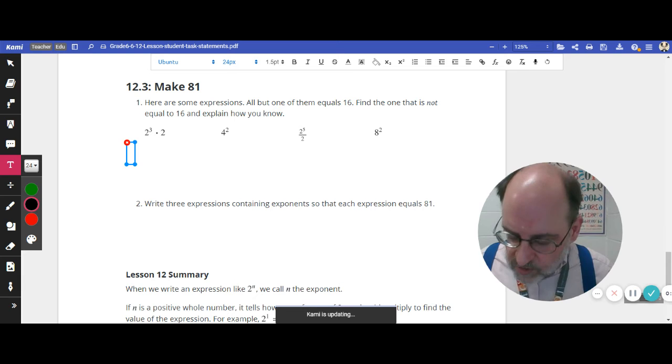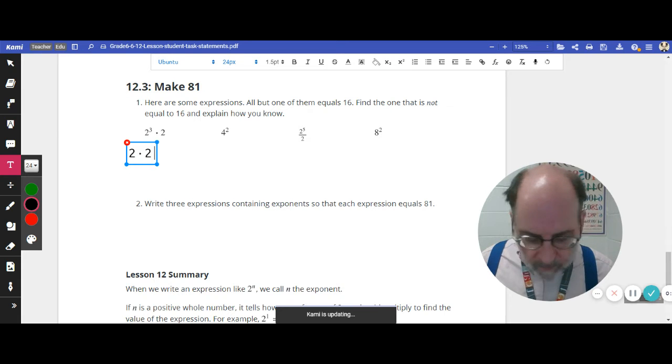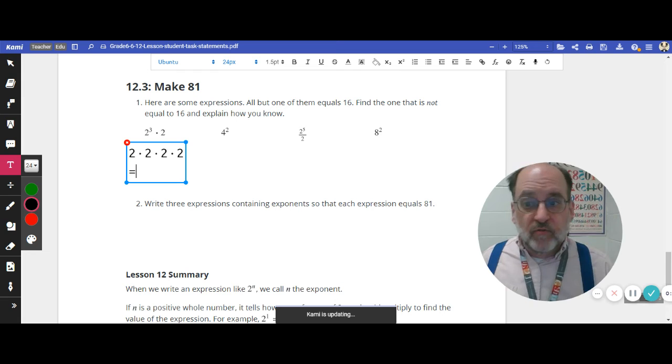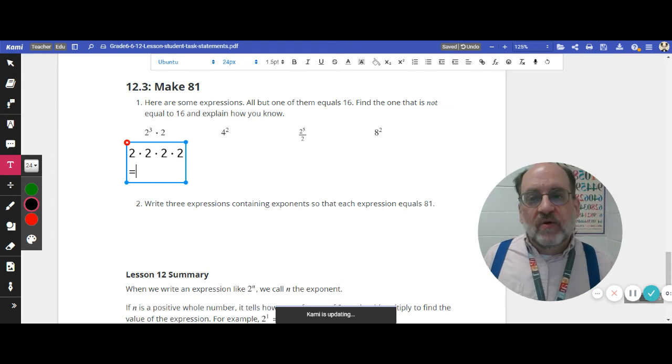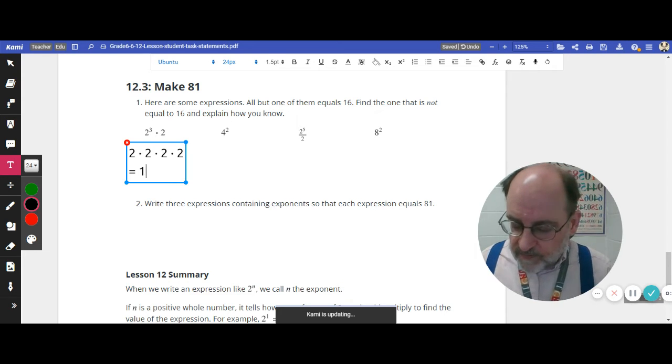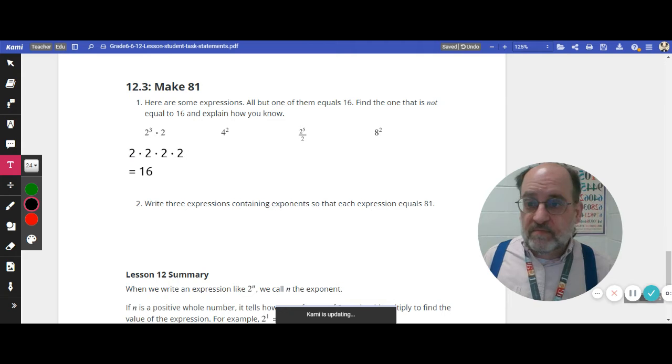So 2 to the 4th is 2 times 2 times 2 times 2. It's really helpful to remember that we are not adding these. So this is not 2 plus 2 plus 2 plus 2. That is not 8. So if you go from left to right, it's really helpful. 2 times 2 is 4, times 2 is 8, times 2 is 16. So that one is 16. We got that.